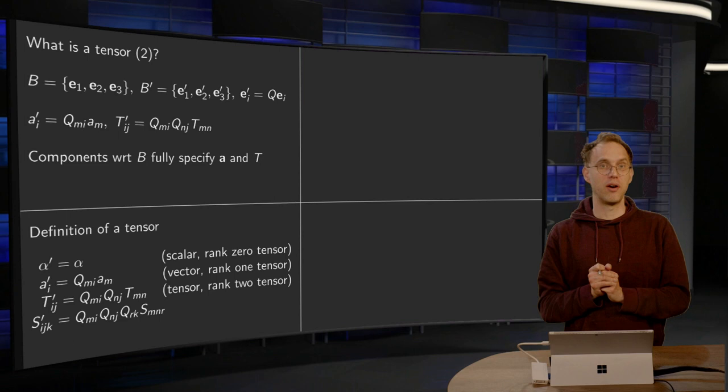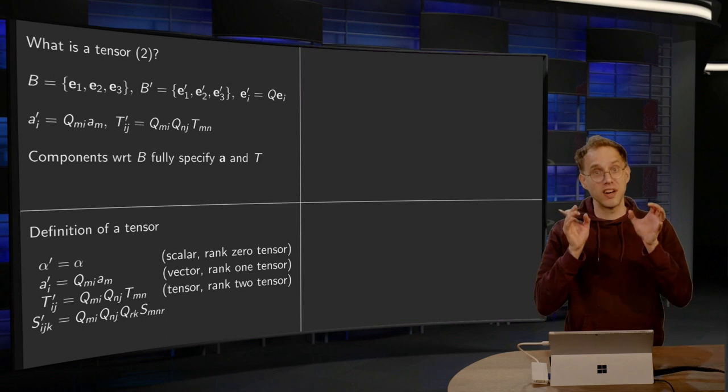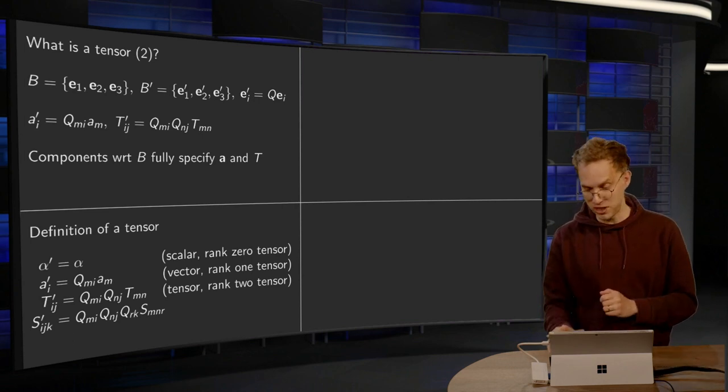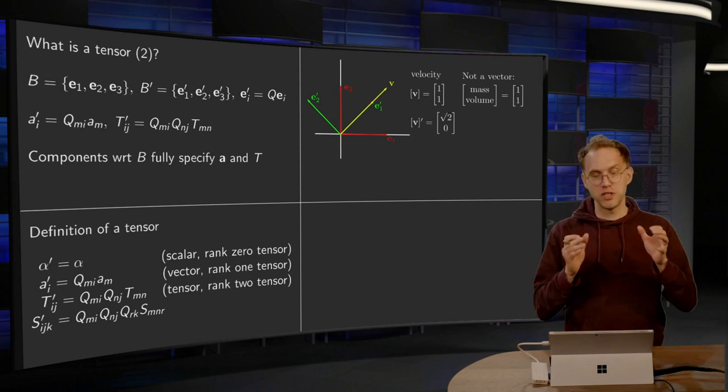So that is how we will define a tensor. An object is a tensor of a certain rank if it satisfies this particular transformation rule. And this allows us to have our physics independent of our choice of basis.